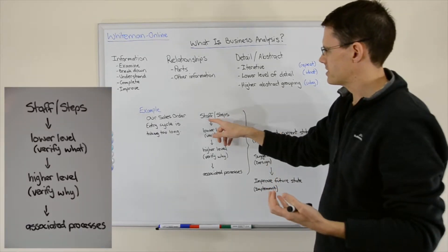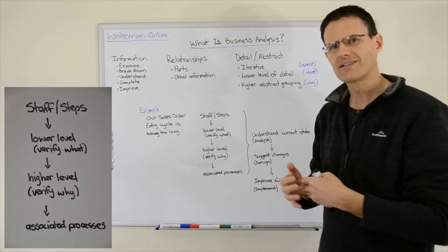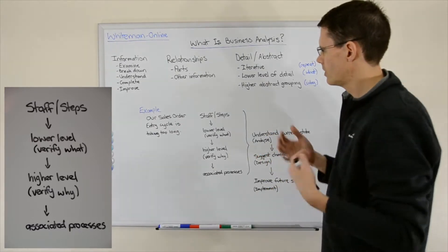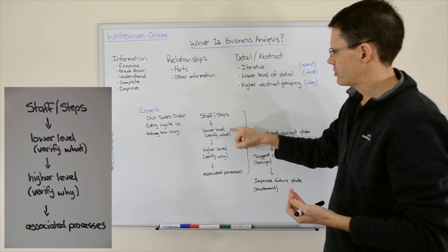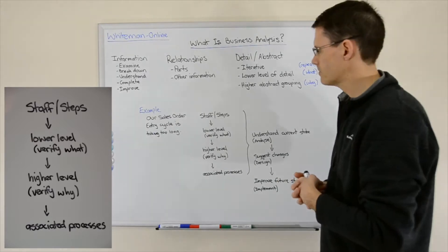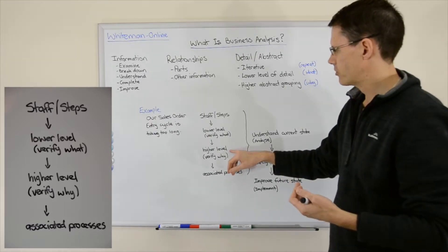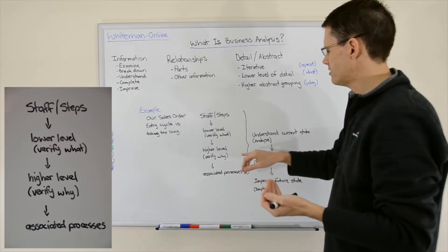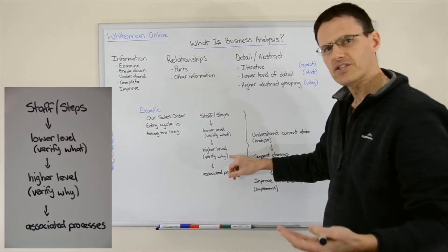For a start, we would go to the staff involved and ask them to describe the steps in the sales order cycle. We would then drill down to lower levels of detail to verify what is actually happening. And then we would group together, abstract to higher levels of detail to verify why those actions are happening.